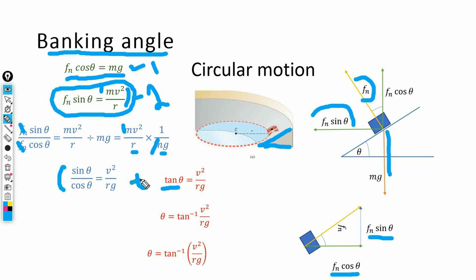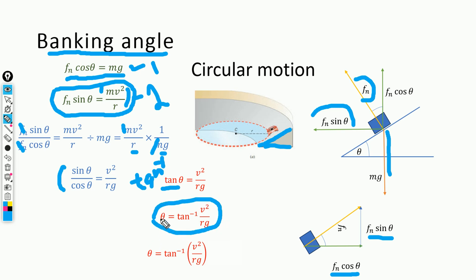Taking the inverse tangent on both sides, tan cancels with tan⁻¹, giving us θ = tan⁻¹(v²/rg). This equation indicates the relationship between velocity and the banking angle. To design a banked road for a velocity of 60 km/h, we substitute the velocity, the radius, and g = 9.8 m/s² to obtain the required banking angle theta.